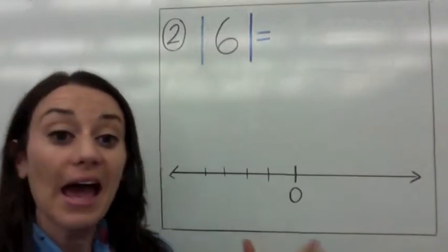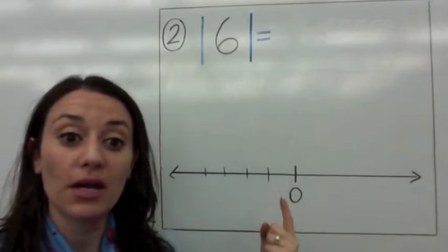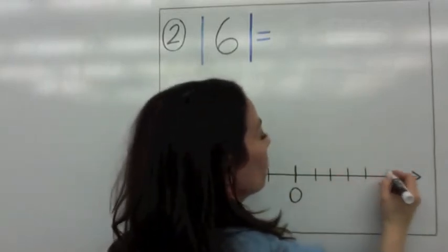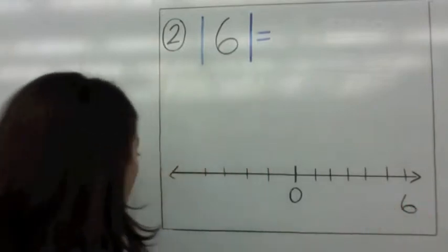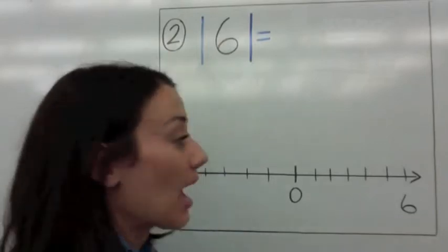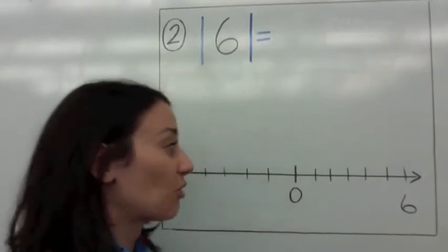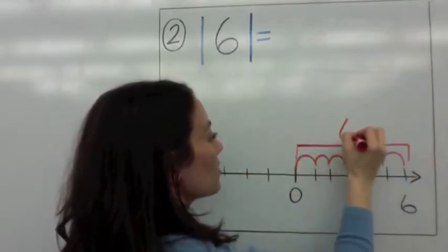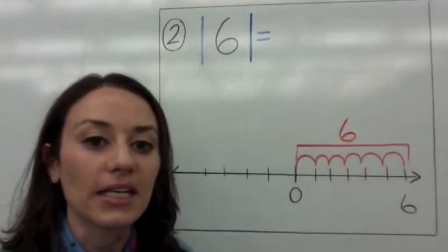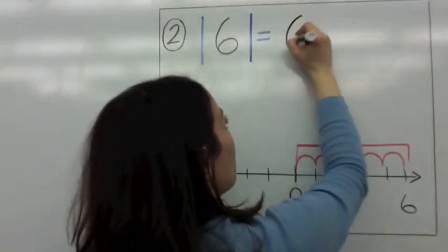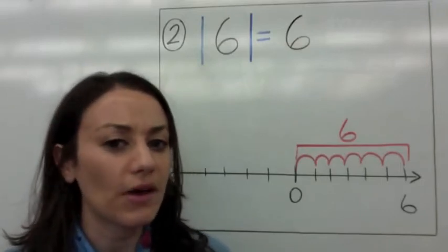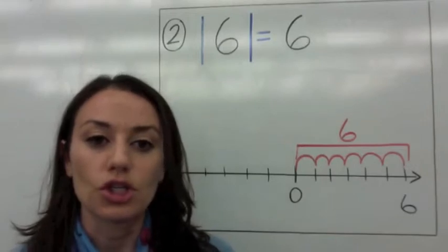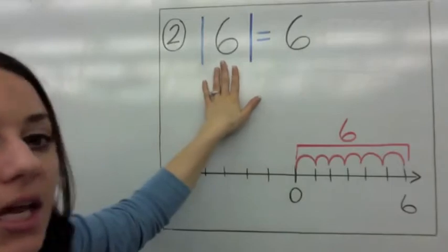What if I ask you what is the absolute value of 6? How many spaces from 0 does it take to get to positive 6? Positive is to the right, so 1, 2, 3, 4, 5, 6. Absolute value is just distance. The absolute value of 6 is 6, because it's just 6 spaces from 0 on the number line. So when you take the absolute value of a positive number, it stays positive. When you take the absolute value of a negative number, it's also positive.